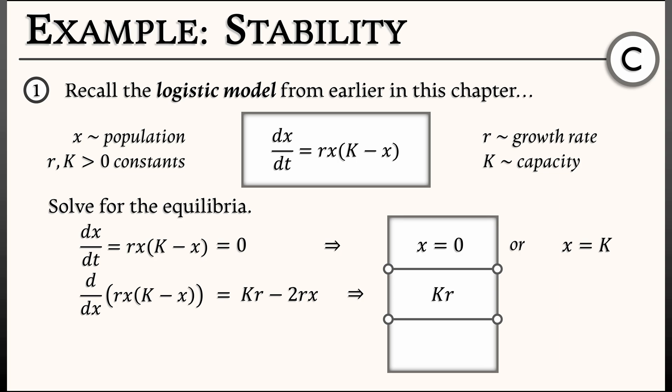But what about the second equilibrium at x equals k? When I evaluate the derivative there, I get k times r minus 2 times r times k. That simplifies to minus k times r. That is a negative number. That means that the equilibrium at x equals k is a stable equilibrium.